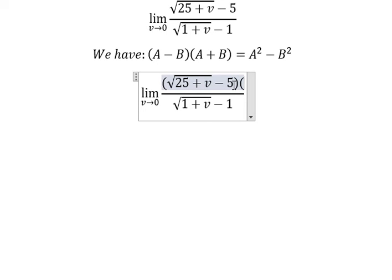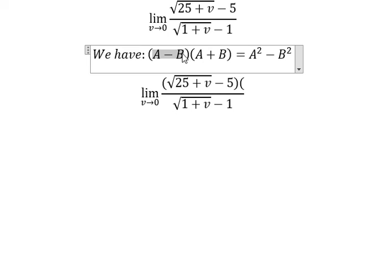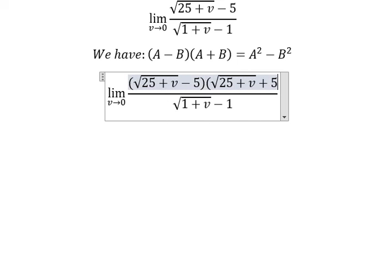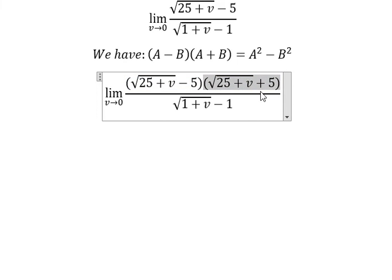This is A, this is B, and we have negative. That's A minus B. Now we need to multiply by A plus B so we can create this formula. Because we created one more factor here, we need to multiply this factor on the denominator.